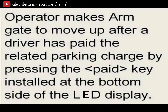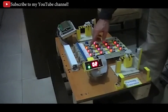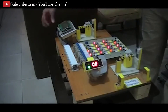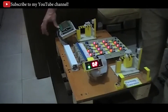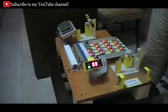The operator makes the arm gate move up after a driver has paid the related parking charge by pressing the paid key installed at the bottom side of the LED display. Notice on the screen that once the operator presses the paid key, the car that is leaving makes the available spots go up from 2 to 3 again.